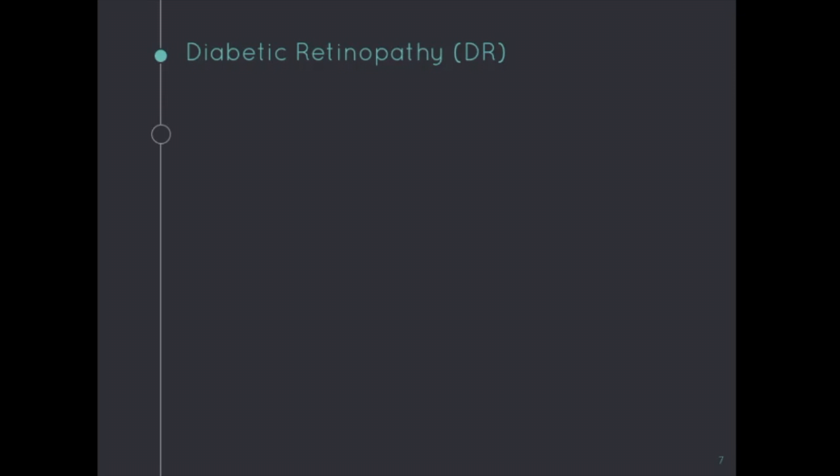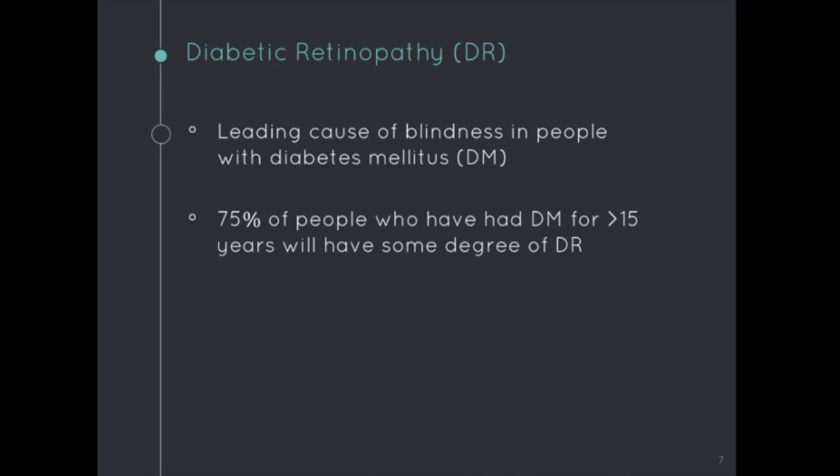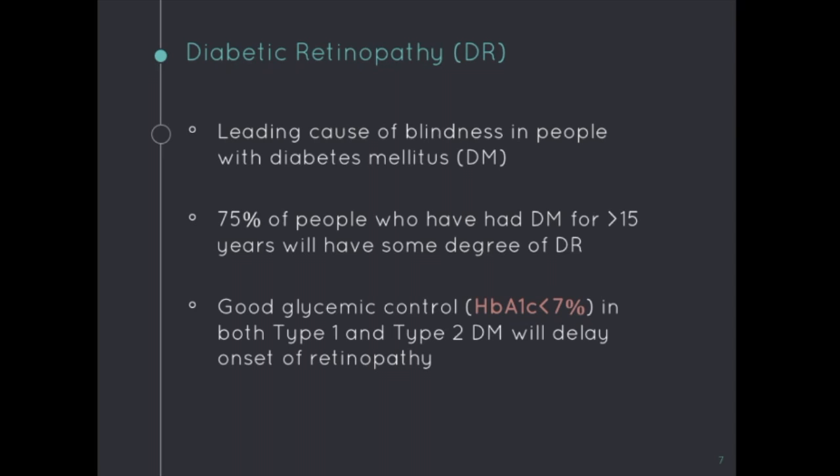As a quick overview, diabetic retinopathy is the leading cause of blindness in people with diabetes. Around 75% of those who have had DM for more than 15 years will have some degree of DR. It is also important to note that good glycemic control — maintaining a hemoglobin A1C below 7% — will delay the onset of retinopathy.